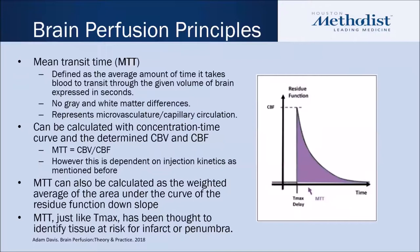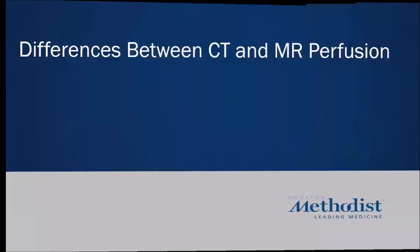The mean transit time is defined as the average amount of time it takes blood to transit through the given volume of brain, expressed in seconds. Once again, it's a calculated measure based on a theoretical construct. There's no gray or white matter difference. This is truly a measure of the microvasculature — the capillary circulation within the tissue of interest. It can be calculated through a concentration time curve based on the cerebral blood volume and blood flow: mean transit time equals cerebral blood volume divided by blood flow, giving you units of time. This is dependent on injection kinetics, viscosity, injection rate, stenosis, and collaterals. T-max can also oftentimes be used to identify tissue at risk for infarct or penumbra.